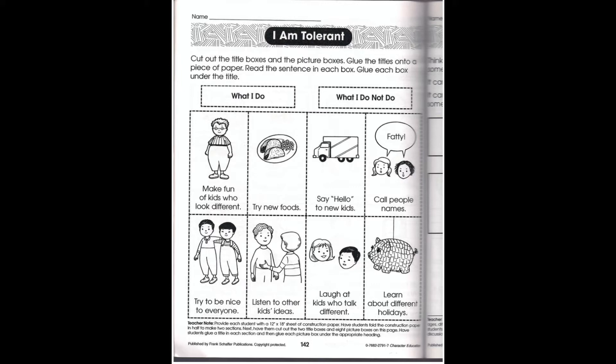Your very last option is if you're unable to print the sheet, which is totally fine — just write down what the answers are. So under 'what I do,' you're going to write down what pictures and images relate to what you do. For example, I might write 'what I do: I say hello to new kids.' And something that I do not do would be 'laugh at kids who talk differently.'